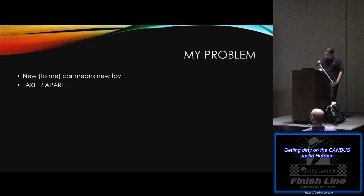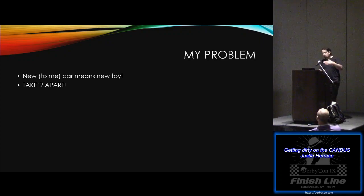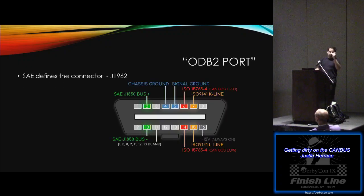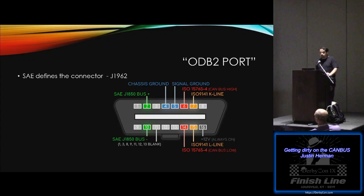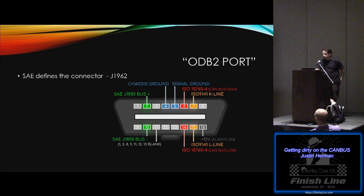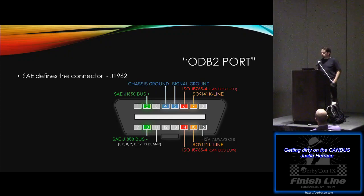When I began, I was looking for the vector to get into the system — and that's, of course, the OBD-2 port. Everybody uses those. In Ohio, we plug in for emissions testing; if your check engine light's on, you don't pass. I didn't know much about the connector itself. What I found in my research was that the SAE defined the connector as a J1692. It has 16 pins and is sometimes called the data link connector. By specification, it's supposed to be no more than two feet from the steering wheel and not require tools to access.